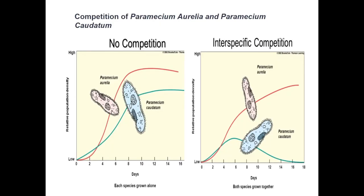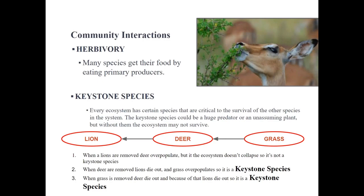Another example of intraspecific competition is two species of paramecium. When introduced into separate agar plates, both are capable of thriving. When introduced into the same agar plate, they compete for resources, and eventually Paramecium aurelia beats Paramecium caudatum, leading to its extinction. We can also break down a community into herbivores and carnivores, but we'll leave that for the next lesson. For now, we're going to look at how they interact in the ecosystem together.